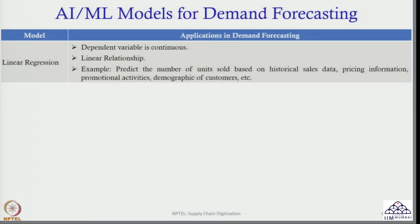The first one is linear regression, in which the dependent variable is continuous — meaning demand could be expressed in numbers. One assumption is that the relationship between the dependent variable and independent variable is linear. An example would be predicting the number of units sold based on historical sales data, pricing information, promotional activities, and customer demographics. It is a very common technique, but the relationship must be linear.